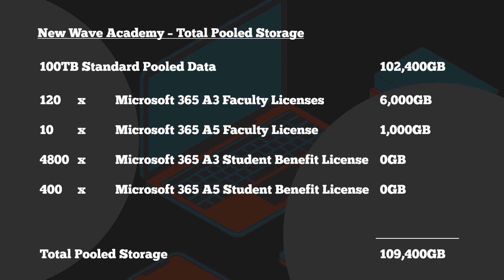If we're getting close to that limit, we don't have to buy more licenses. Microsoft have given us the ability to buy additional storage in ten-terabyte increments. New Wave Academy have decided to buy three lots at roughly $300 each, giving an additional 30 terabytes of data — meaning they're now close to 140 terabytes of total storage.